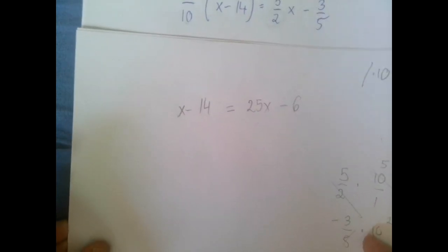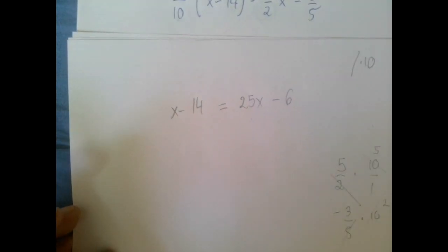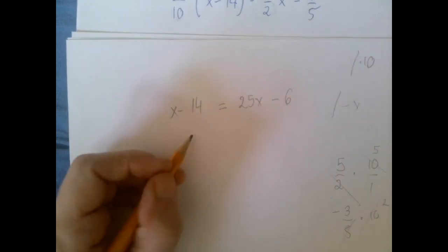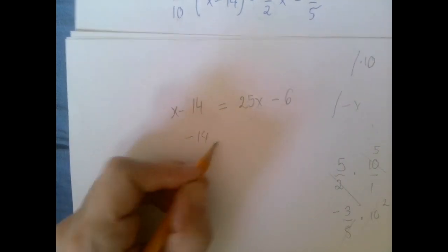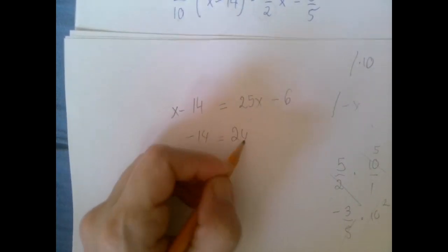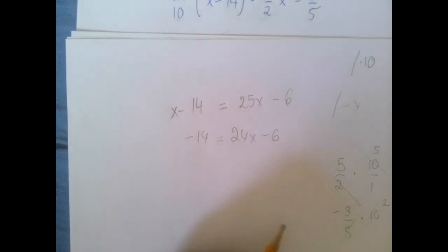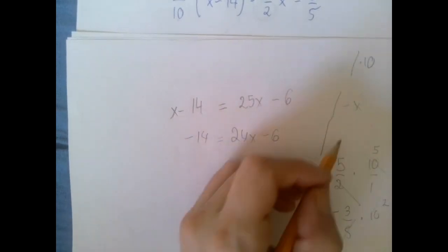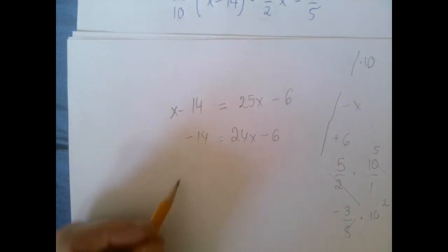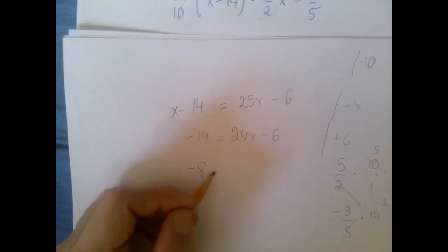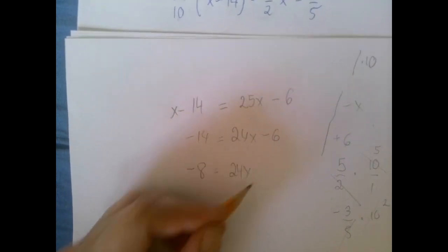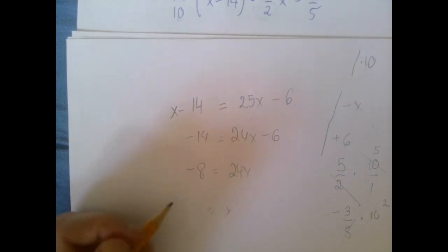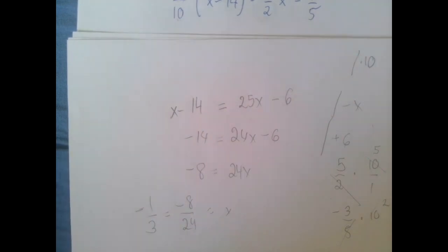And now, it's a very easy equation with integer coefficients. We're going to subtract x, so that's negative 14 equals 24x minus 6. Now we're going to add the 6, so that's minus 8 equals 24x. And now when we divide by 24 we get minus 8 over 24 or minus 1 over 3, so we got the same answer.